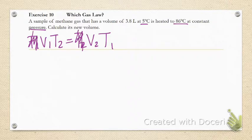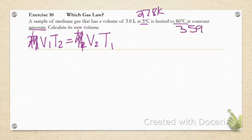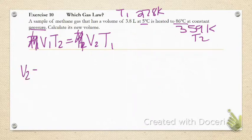Okay, 3.8 liters times 359 kelvin, then 278 kelvin on the bottom. We increased temperature so we expect volume to also increase.